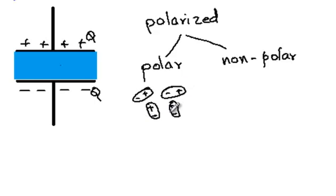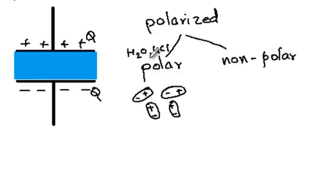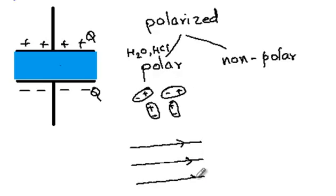The dipoles are randomly oriented due to thermal agitation, so they cancel out each other's effects and the material as a whole does not have a dipole moment. Some examples of polar molecules are water and HCl. In the presence of an external electric field, these dipoles get aligned along the electric field.